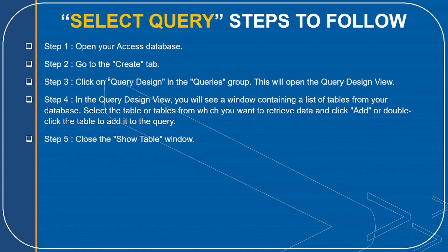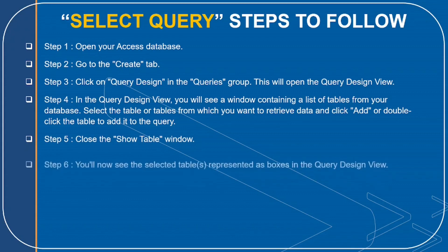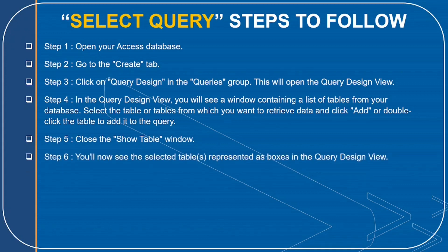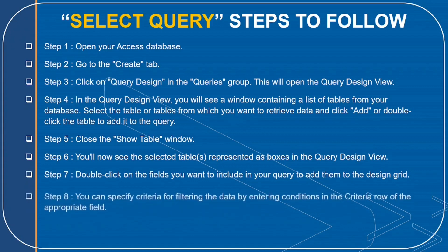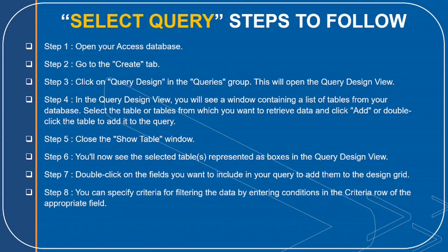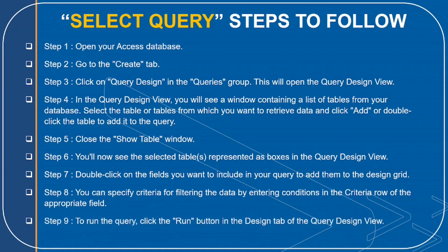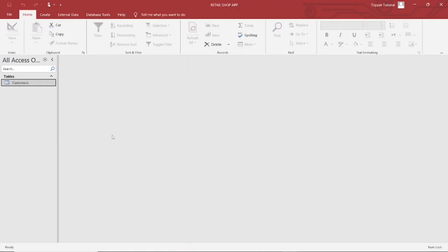Step 5: Close the Show Table window. Step 6: You'll now see the selected tables represented as boxes in the Query Design View. Step 7: Double-click on the fields you want to include in your query to add them to the design grid. Step 8: You can specify criteria for filtering the data by entering conditions in the criteria row of the appropriate field. To run the query, click the Run button in the Design tab of the Query Design View.